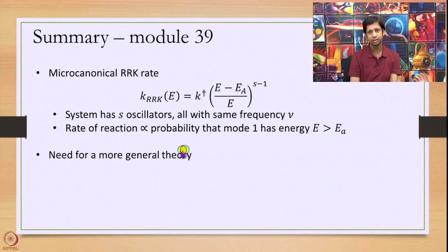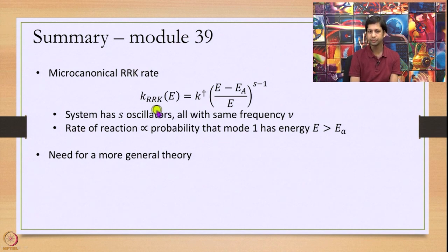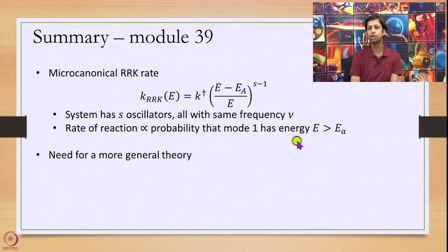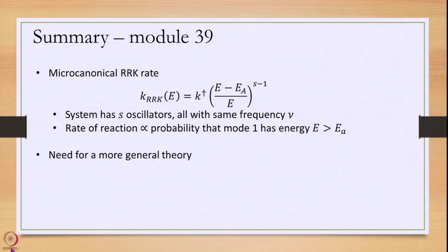Today we discussed the RRK model to calculate rate constant at a given energy. Within this model we derived the rate constant as k† · ((E − Ea) / E)^(s−1). The important approximations are: the system has s oscillators all with the same frequency ν; the rate is proportional to the probability that mode 1 gets energy more than Ea; and we have large energy such that E − Ea >> s − 1. We need a more general theory, which will be developed in the next module. Thank you very much.